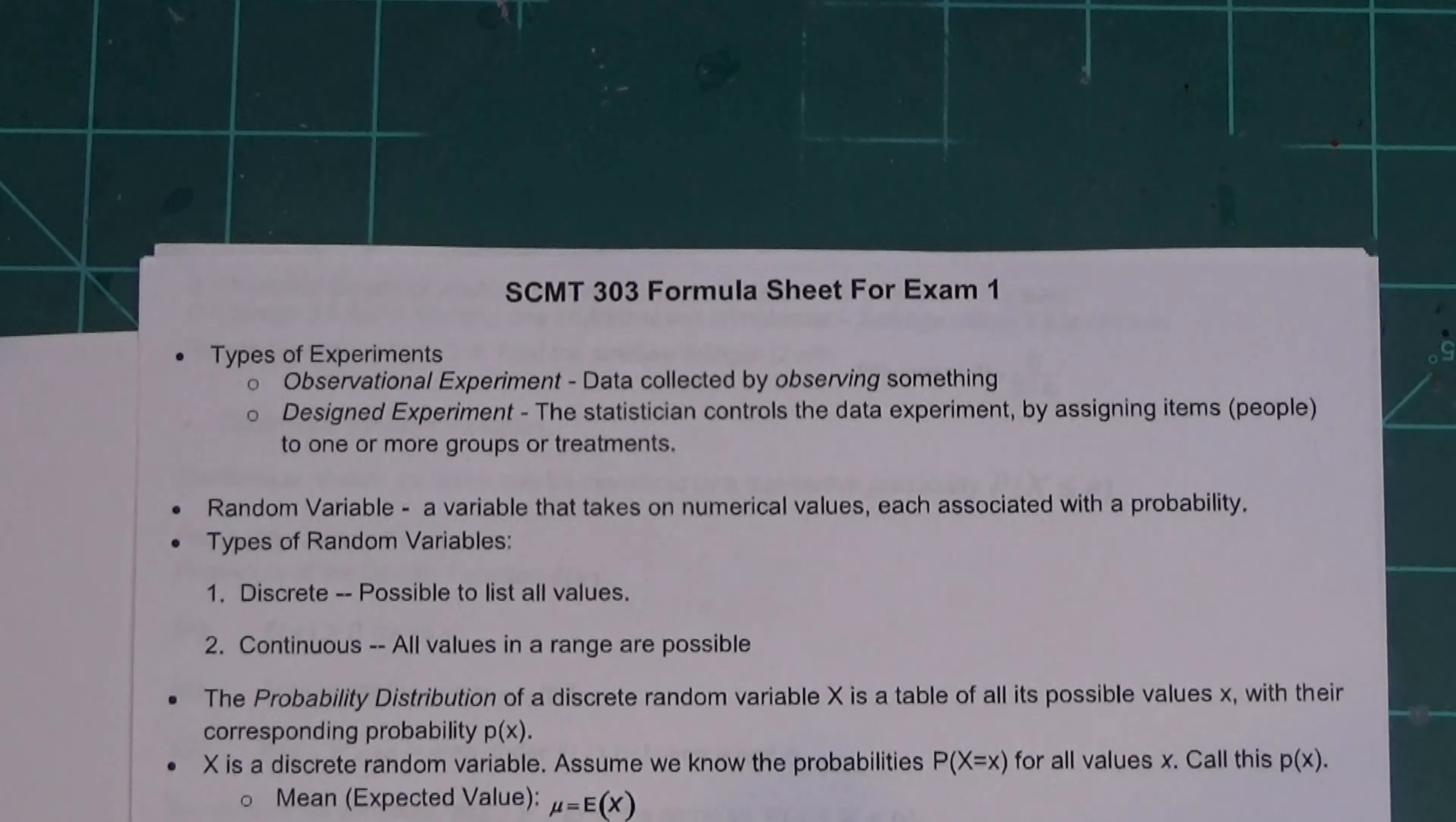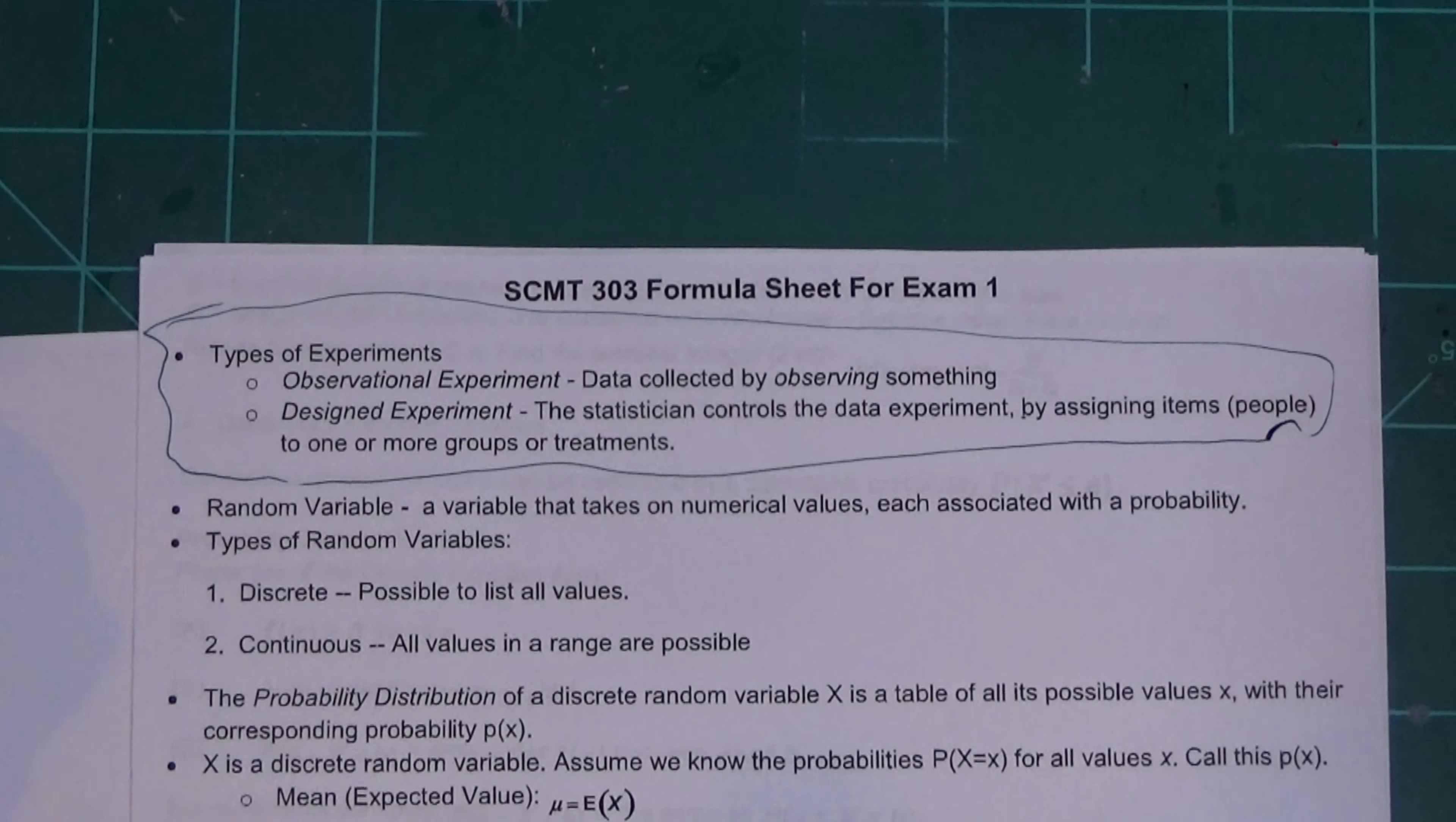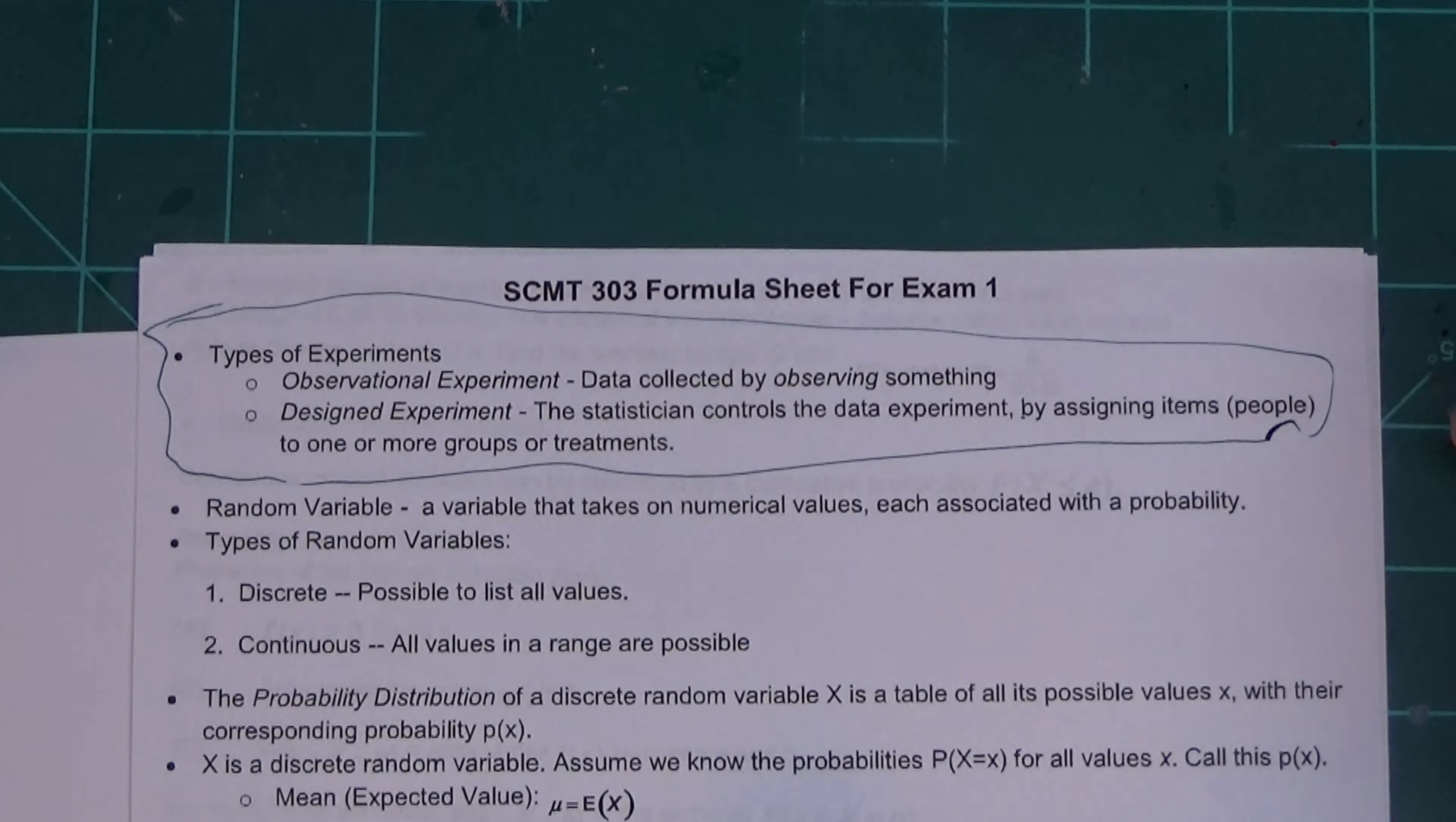It defines an observational experiment—observing something—and designed experiments where the statistician controls the data of the experiment. They're not defined too horribly bad. If anything, this is just a quick theory question on the test.